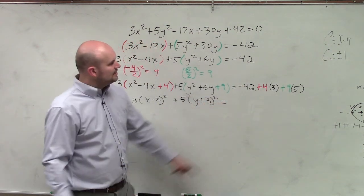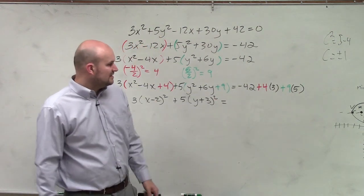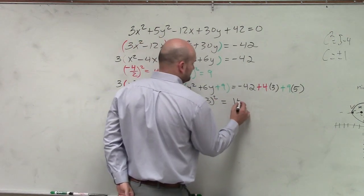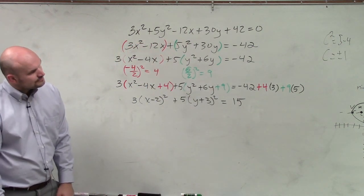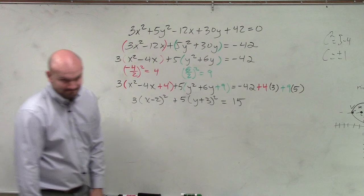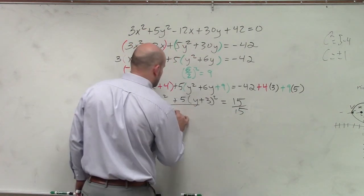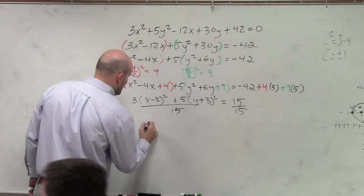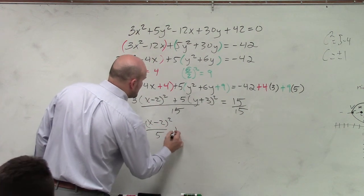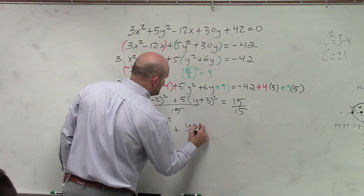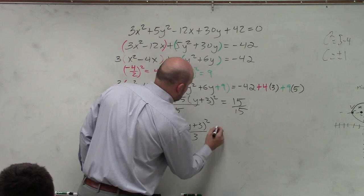And let's see, that becomes 12, 45. So that's 57. So that becomes 15. Therefore, we have (x - 2)² / 5 + (y + 3)² / 3 = 1.